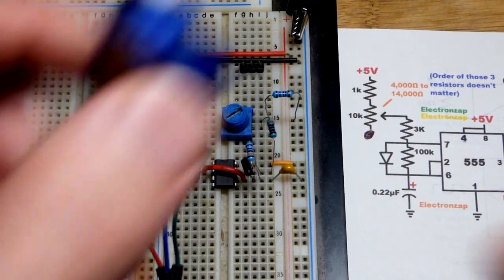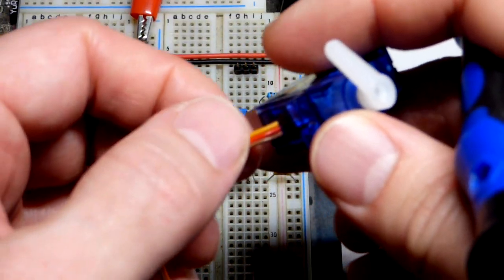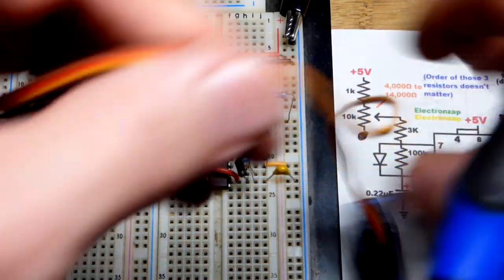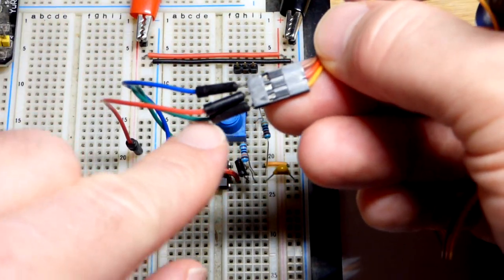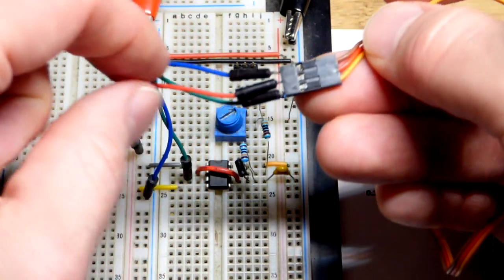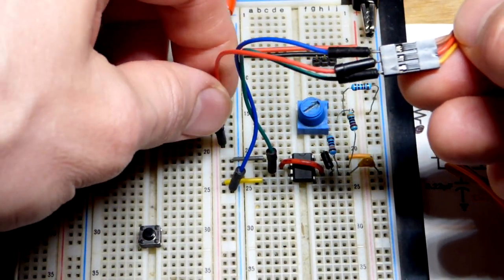The brown is negative supply, red is positive supply, and orange is the signal. You can see over here that I actually have orange going to green right there, negative supply to the blue jumper, and then the red jumper to the positive supply.